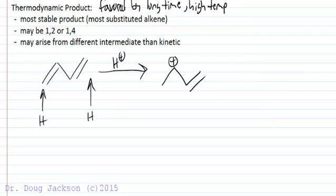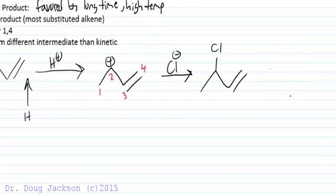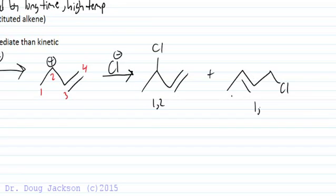We said in a previous video that the 1,2 positions are where the initial addition occurs. So we define positions as 1, 2, 3, 4 — nothing to do with naming, just identifying where the reactivity is occurring. From this cation, we can form a 1,2-product — say we have hydrochloric acid — or we can form a 1,4-product, as we looked at in a different video.